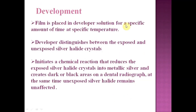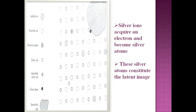Developing: the film is placed in a developer solution for a specific amount of time at a specific temperature. The developer can distinguish between exposed and unexposed silver halide crystals. Not all silver halide crystals are sensitized; only some captured electrons, acquired Ag+ ions, and became silver atoms. Some are exposed, some are not.